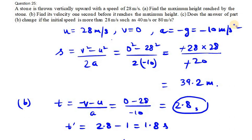Part C asks: does the answer of part B change if the initial speed is more than 28 meters per second, such as 40 or 80 meters per second? The answer is no. Because 1 second before reaching maximum height, the velocity depends only on acceleration, which remains the same at minus 10 m/s². For any higher initial velocity, only the maximum height increases, so the answer remains unchanged. That's the answer for question number 25.